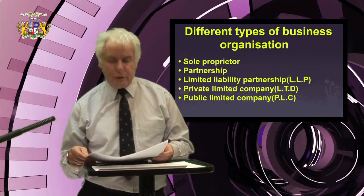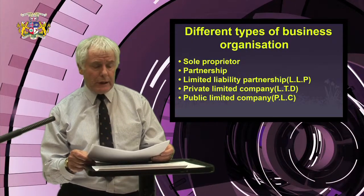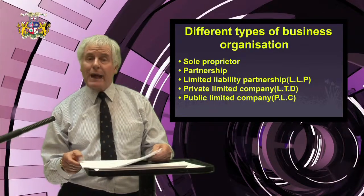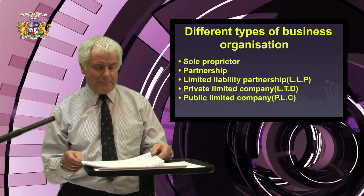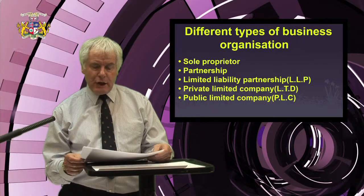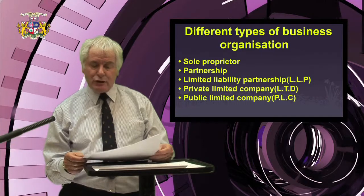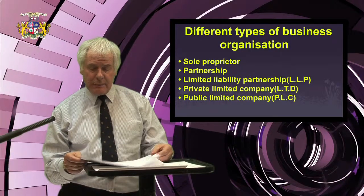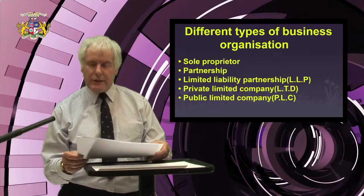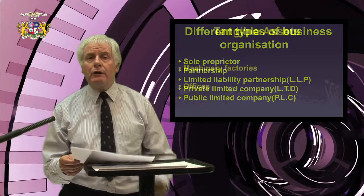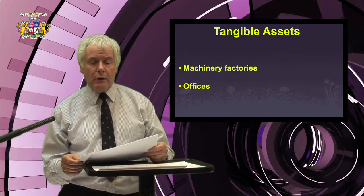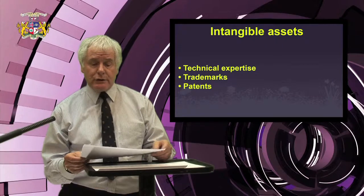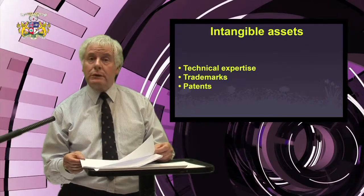Once the business is up and running, it would need a throughput of financial capital. Profit is achieved when the capital coming into a business is greater than the capital being paid out. Many companies decide upon a loan from a bank. If a bank shows confidence in a proposed business plan and decides to invest, it is investing into the assets of the business — tangible assets such as machinery, factories, and offices, and intangible assets such as technical expertise, trademarks, and patents.